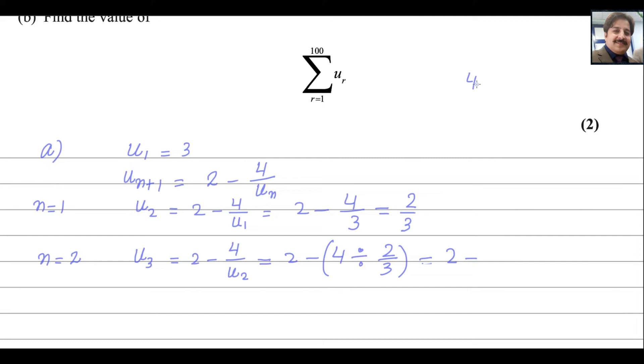2 minus 6 and you get the answer for this as negative 4. When n equals to 3, you will get the value for U4. U4 will be equals to 2 minus 4 over U3, and it is equals to 2 minus 4 divided by negative 4. And it will be 2 plus 1. Negative and negative makes plus, and 4 divided by 4 is 1. So answer is 3.